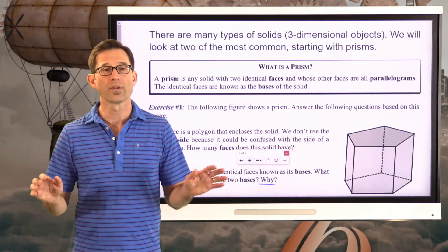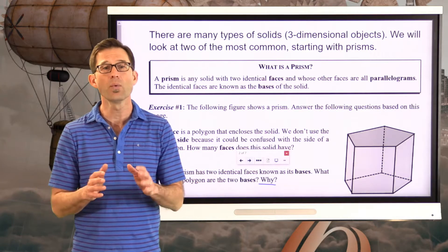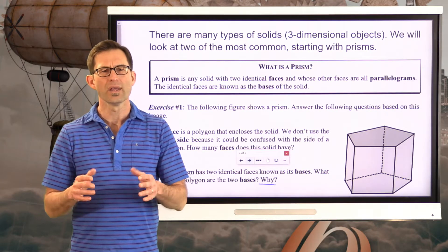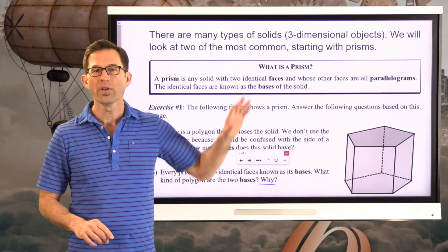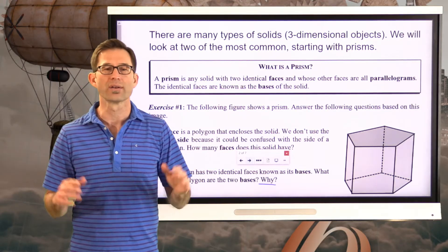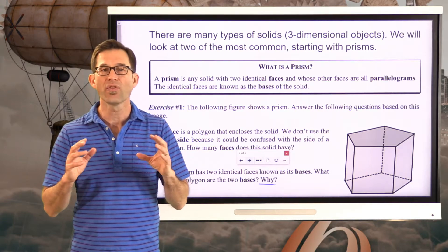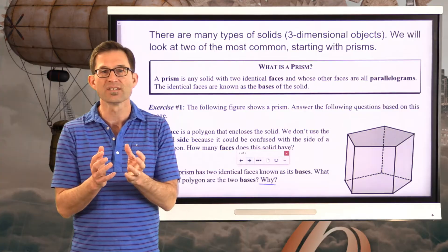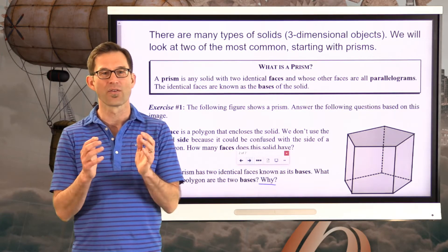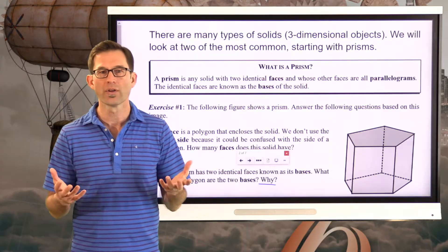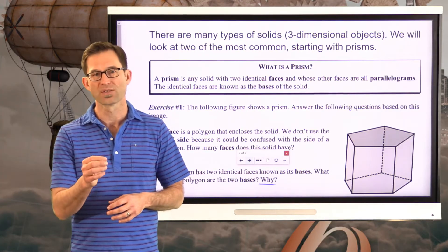There are a lot of different types of solids, which are just three-dimensional objects. I do want to point out that in science you study solids, liquids, and gases — when we talk about a solid here, we're not talking about that kind of solid. A solid is just anything that exists in a three-dimensional world whose volume and surface area you can measure — that's what we call a solid.